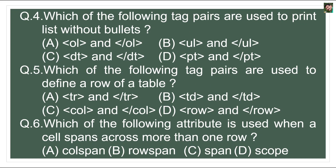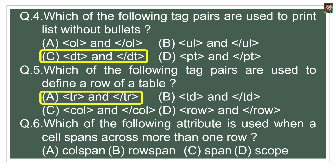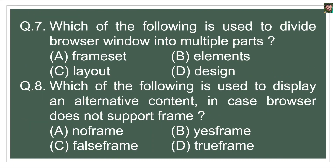Question 4: Which tag pairs are used to print a list without bullets? When you want a list without bullets or numbering, we use the dt tag — definition term — which is used for definitions and their terminologies. Question 5: Which tag pairs define a row of a table? Table rows are defined using tr and slash-tr. Question 6: Which attribute is used when a cell spans more than one row? That attribute is rowspan. If a cell spans more than one column, the attribute is colspan.